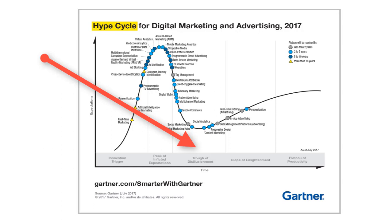For a technology to be in the trough of disillusionment doesn't indicate that it may necessarily overcome the barriers and progress to the next phase, nor does it mean it will die in that phase. It's possible that a technology may become successful without hitting the trough of disillusionment, even though some argue that technologies rarely mature before going through a disillusionment phase.